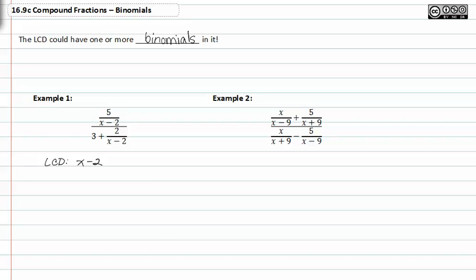If we multiply all the terms in the numerator by x minus two, and all the terms in the denominator by x minus two, we can clear that fraction in both the numerator and the denominator.